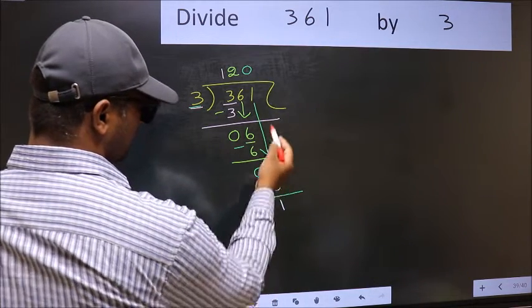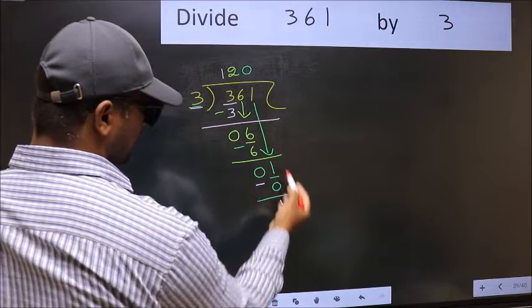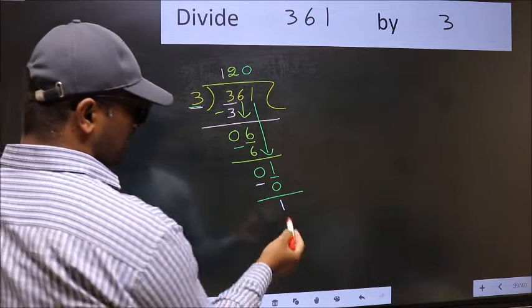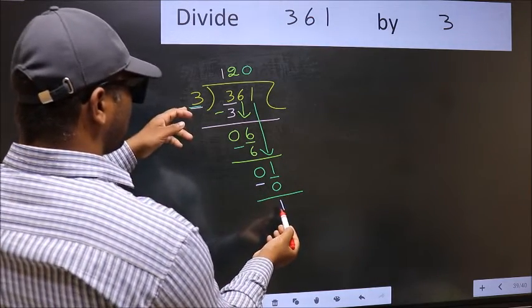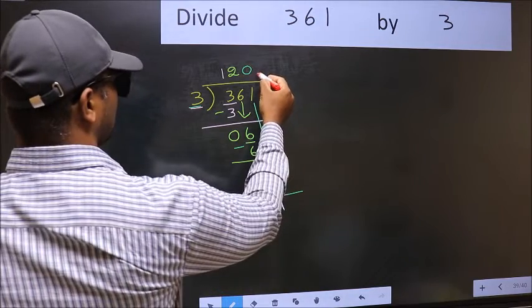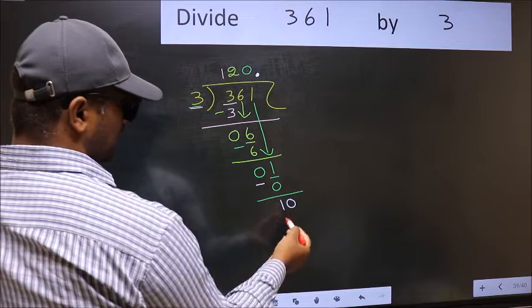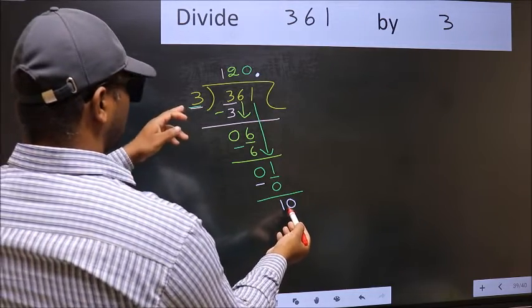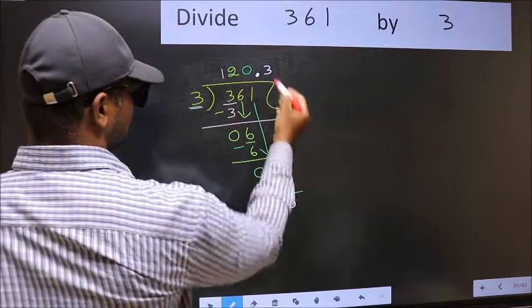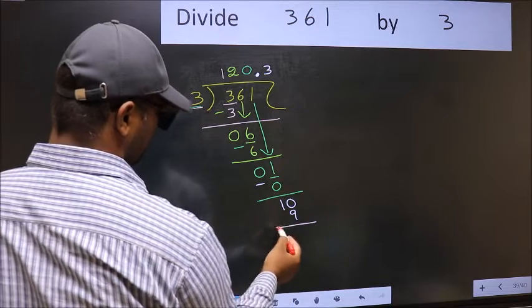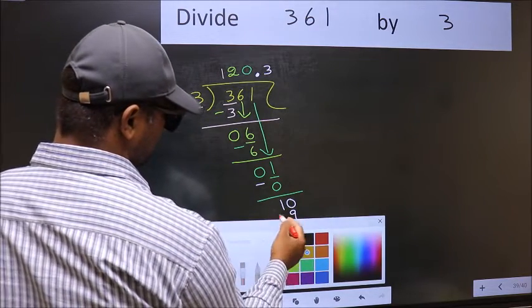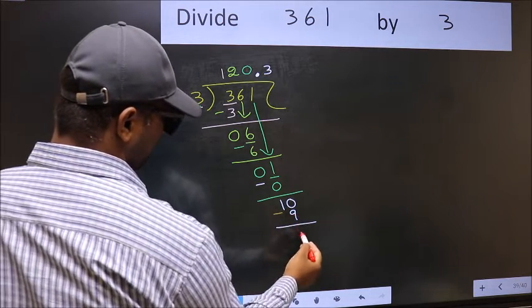Over here, we did not bring any number down. And 1 is smaller than 3. So now you can put a dot and take 0. So, 10. A number close to 10 in 3 table is 3, 3 is 9. Now you should subtract. 10 minus 9, 1.